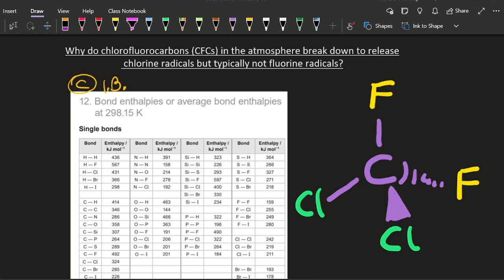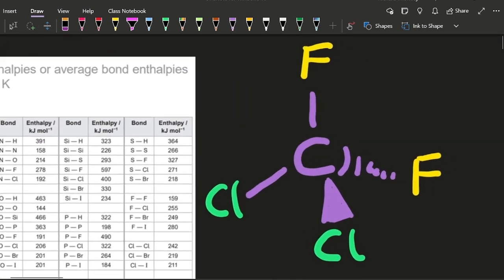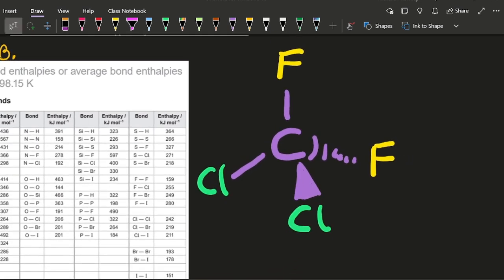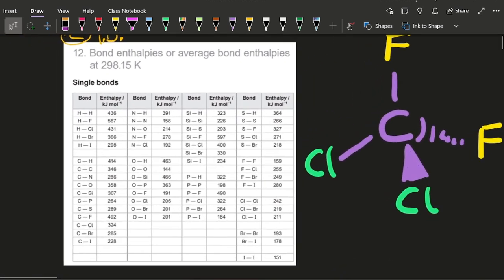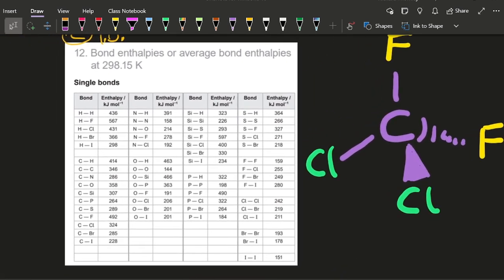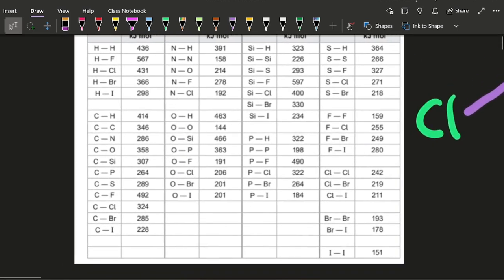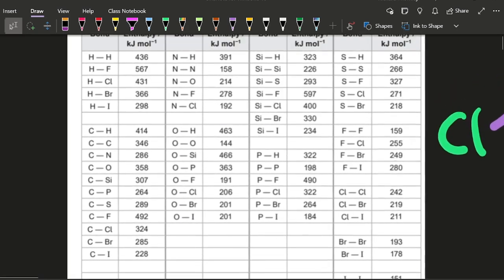Well, here is a typical chlorofluorocarbon. It's got covalent bonds between carbon and chlorine and carbon and fluorine. And here on table 12 is the average bond energies, how much energy it takes to break a mole of these bonds in the gaseous state, copyright IB. And what's the strongest bond?